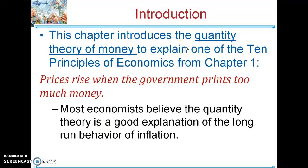The main theory in this chapter is referred to as the quantity theory of money, and it's really simple. It's the idea that the quantity of money determines the value of that money. So, if you double the quantity of money, it becomes half as valuable. When something becomes more plentiful on the planet, its value tends to decrease.